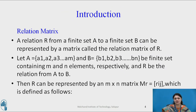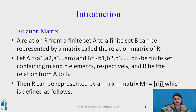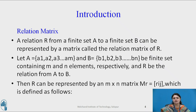What is a relation matrix? A relation R from a finite set A to a finite set B can be represented by a matrix called the relation matrix of R. When we talk about a matrix, it means there are two finite sets A and B. We can relate set A with set B with some type of relation. A matrix is nothing but a tabular representation between your two relations.